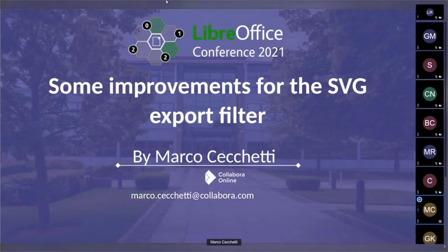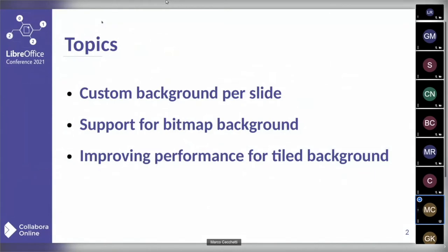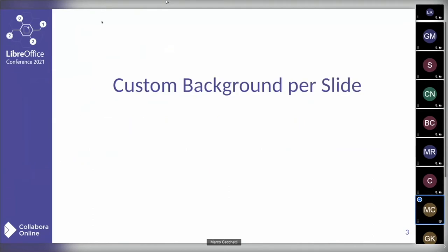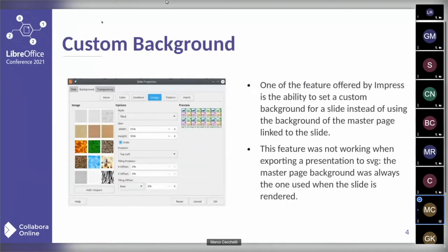The improvements we are going to see for the SVG export filter are all about exporting the background of a slide. The first topic is about being able to export a slide that owns a custom background. One of the features offered by Impress is the ability to set a custom background for a slide instead of using the background of the master page linked to the slide. This feature was not working since the JavaScript presentation engine always showed the master page background instead of the custom background.